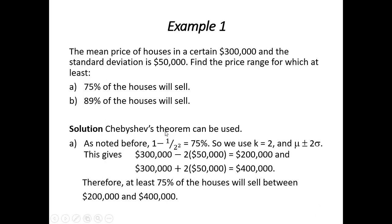Chebyshev's theorem can be used. When we have 75%, if we set 1 - 1/k² equal to 75%, we see that k is equal to 2. And we use the formula μ ± 2σ to get a range. So $300,000 minus 2 times $50,000 gives $200,000, and then $300,000 plus 2 times $50,000 gives us $400,000.